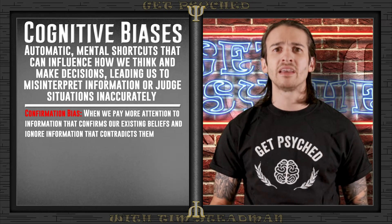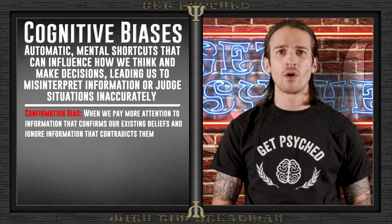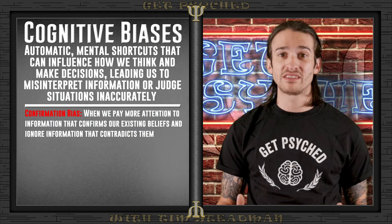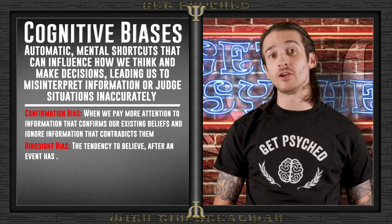Confirmation bias is our tendency to search for or favor information that confirms things we want to believe. We might give more weight to evidence that supports our views and overlook information that goes against them. In Kevin's case, if he believes his efforts are no longer impactful, he might only notice instances that support this view — like his suggestions being ignored — while overlooking any positive feedback he may have received, reinforcing his decision to withdraw.